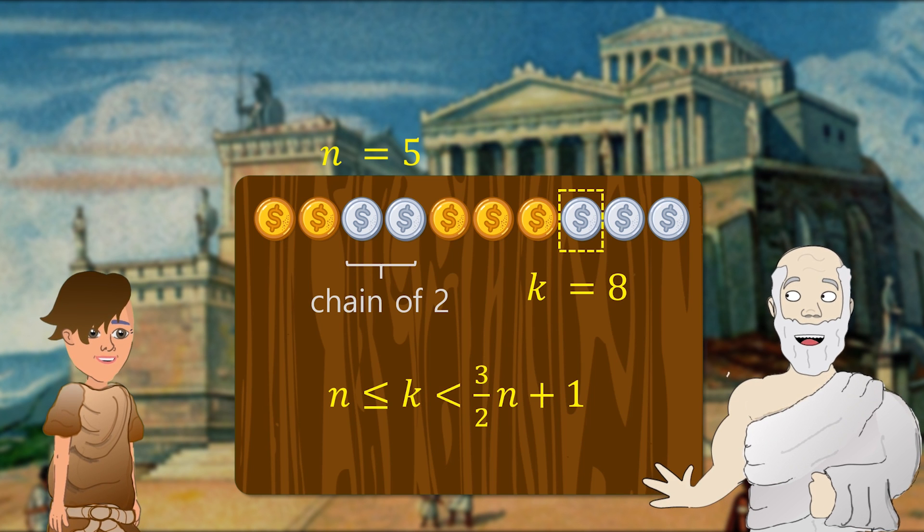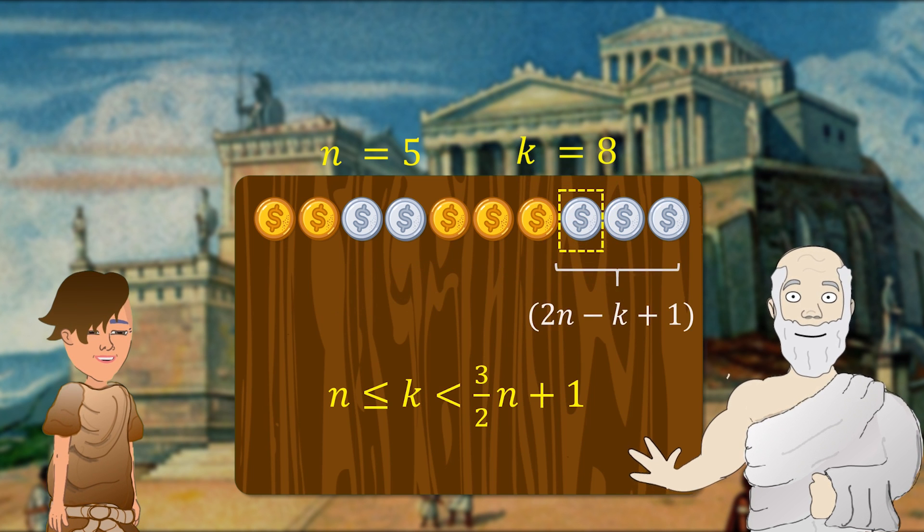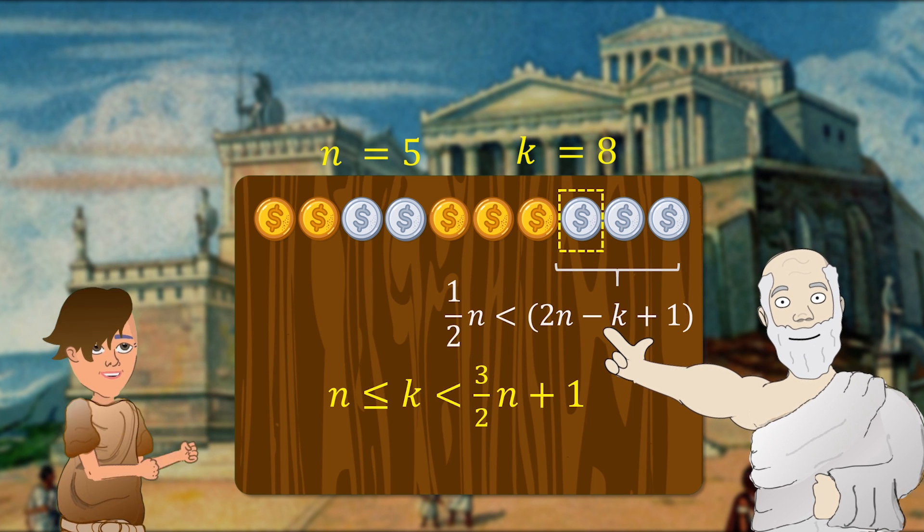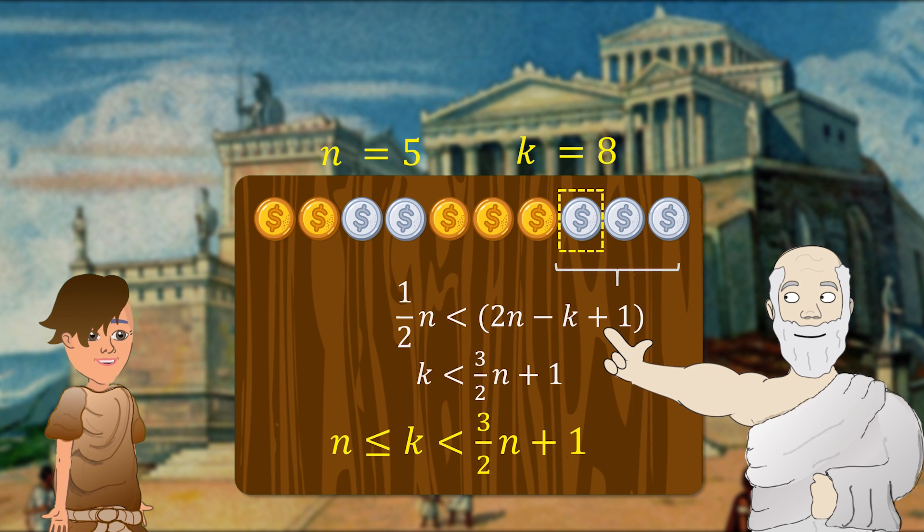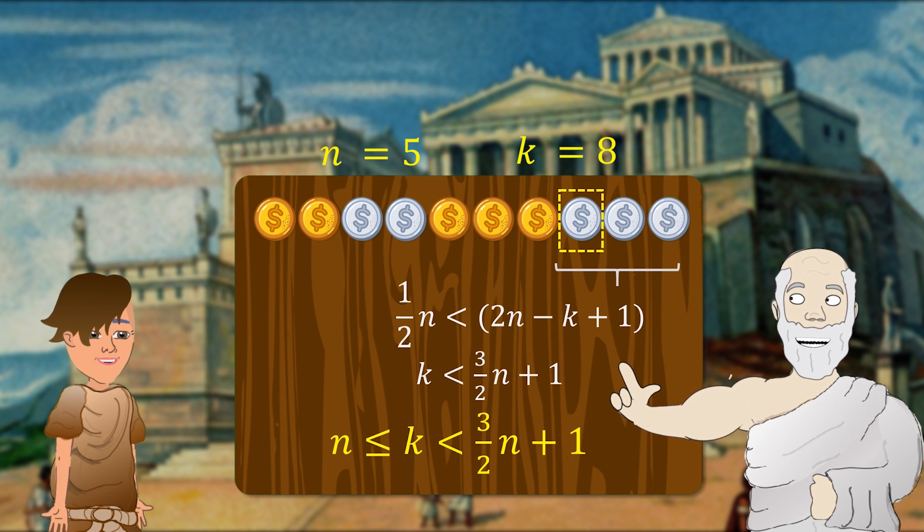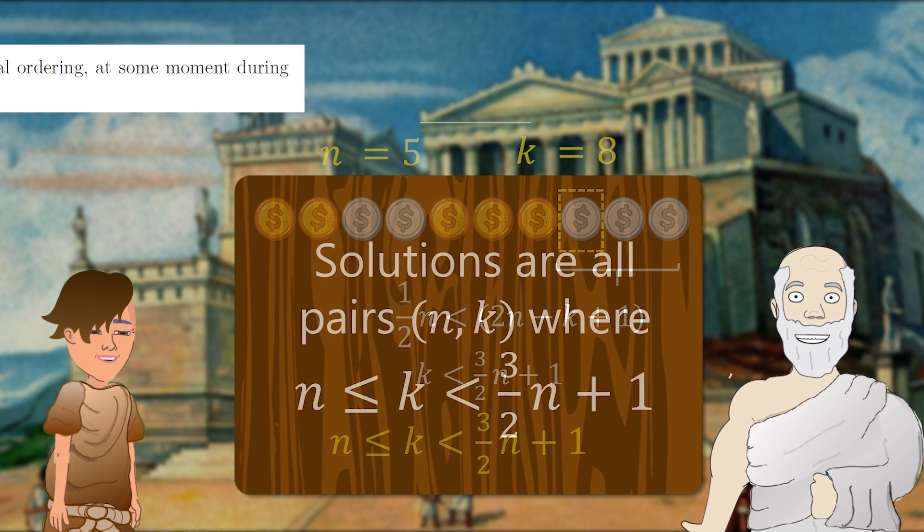Algebraically, we could express the distance from the kth position to the end of the row in terms of n and k, require that it be greater than half of n. This gives the upper bound as you stated, which applies for even or odd n.